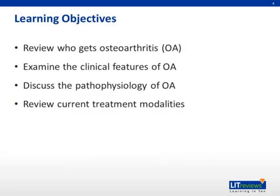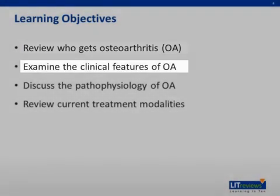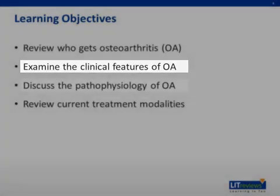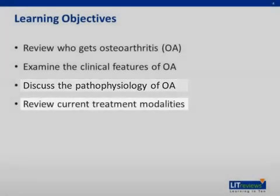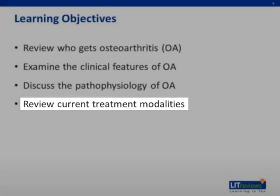The objectives of this review are to discuss who gets osteoarthritis, or OA, cover the common clinical findings that distinguish OA from other arthritic conditions, as well as briefly review the pathophysiology as we currently understand it. Finally, we will conclude with treatment of a patient with OA.